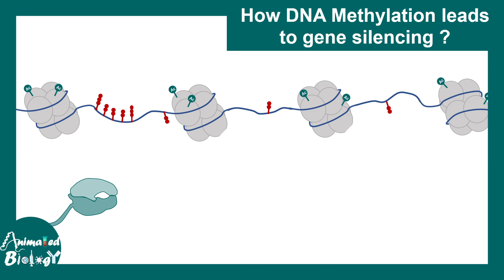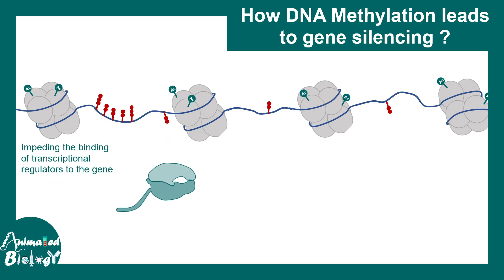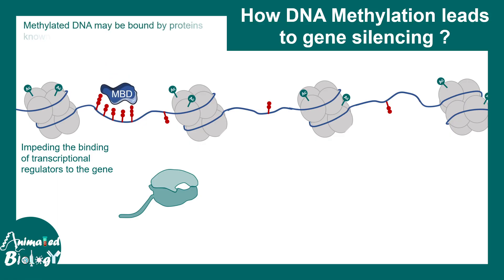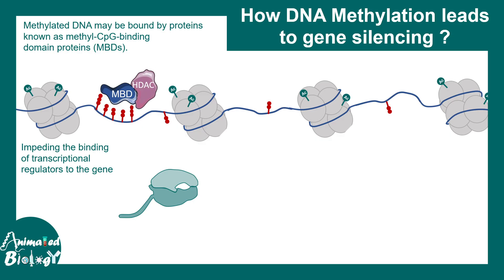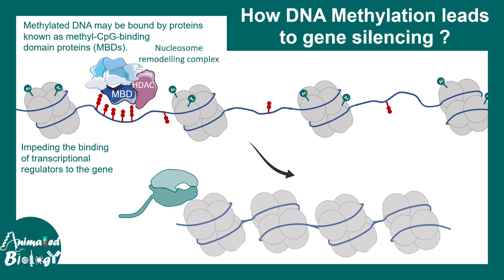How does methylation lead to gene silencing? When there are methyl marks, there can be interference with the binding of transcription factors or RNA polymerase in that region. Moreover, there could be methyl-DNA binding proteins which can impede this process further. These can also attract other proteins like HDACs or deacetylases, which further deacetylate nearby histones, thereby compacting the overall chromatin and silencing gene expression.